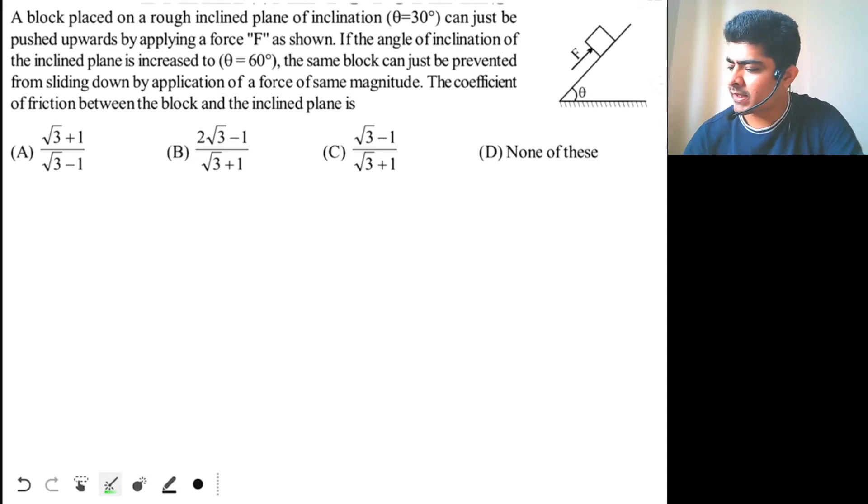You can now see this question. A block is placed on a rough horizontal incline plane of inclination theta equal to 30 degrees, can just be pushed upwards by applying the force F as shown. If the angle of inclination of the incline plane is increased to theta equal to 60 degrees,